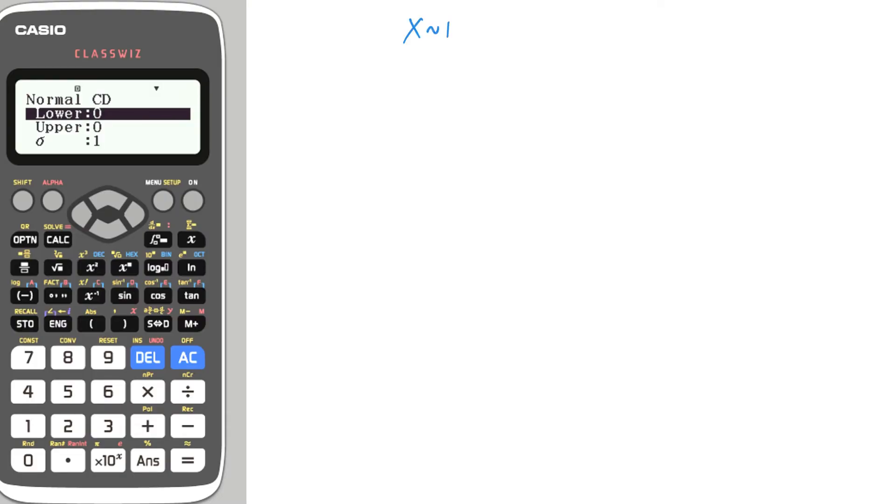So Normal CD is number 2, so I need to press number 2, and we're going to need an example. Let's do a very quick one: X ~ N(20, 4²), probability of less than or equal to 26. You can see that my mean is 20 and my standard deviation is 4.